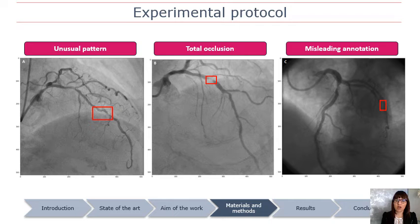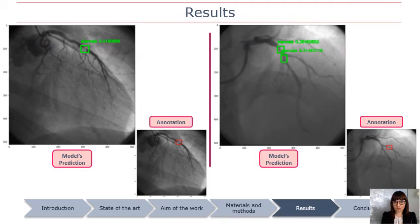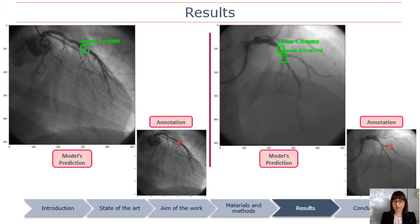Issues included bounding boxes placed in incorrect positions or stenosis not completely included inside the box. As a result, these stenosis were not always predicted correctly. In some cases, like the image on the left, the prediction matches the ground truth. In others, like on the right, stenosis is predicted in different locations along the arteries. These results are shown for the second dataset, but similar behavior occurs across all training settings.